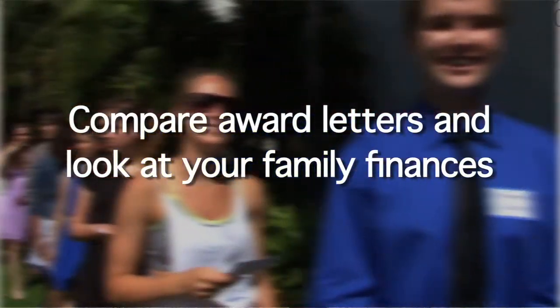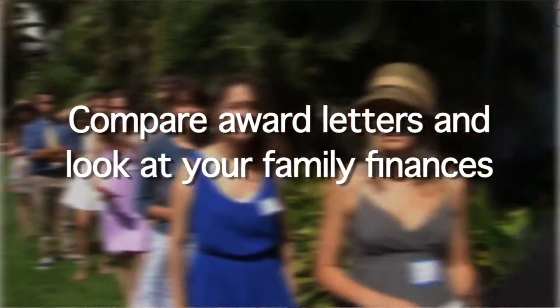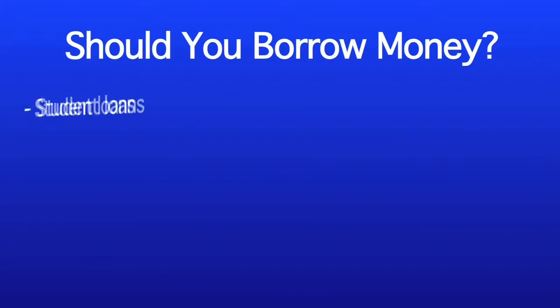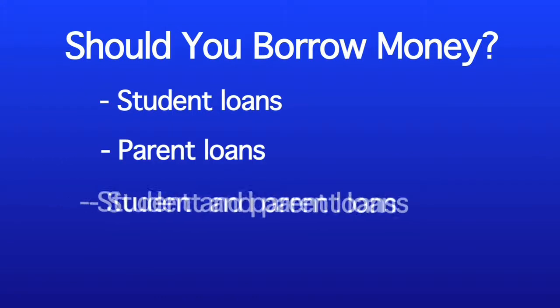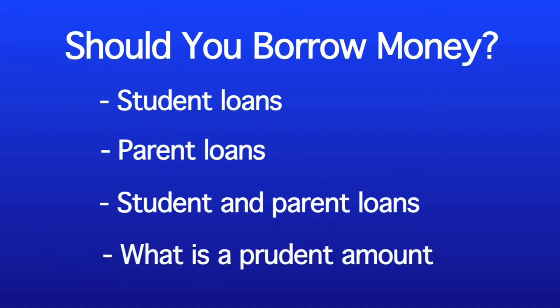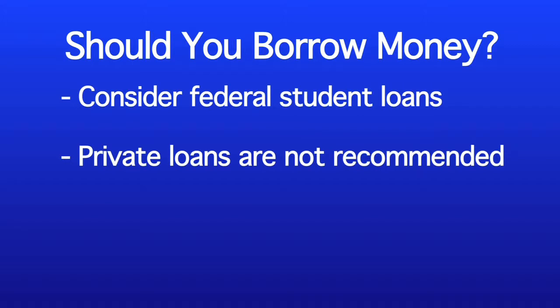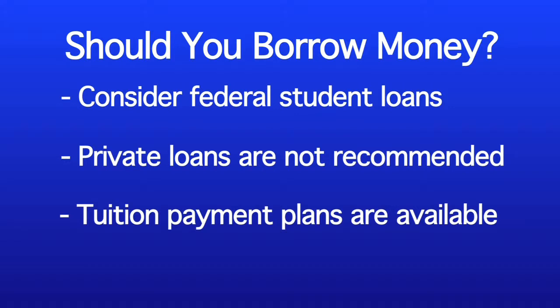Once you've compared award letters, take a good hard look at your family finances and spell out what you'll need to contribute each semester. This is also the time to consider if you will need to borrow money through student loans or parent loans, or both, and think about what is a prudent and reasonable amount to borrow. First, consider federal student loans — private bank loans should be your last option due to higher interest rates and less flexible repayment options, so we really don't recommend taking out private loans. Also, be aware that many colleges offer tuition payment plans that allow you to make monthly payments, which can be more workable for some families. You can inquire at the College Financial Aid Office to see if this option is available.